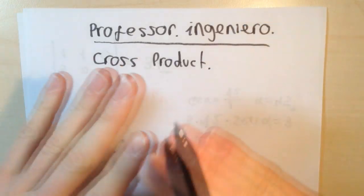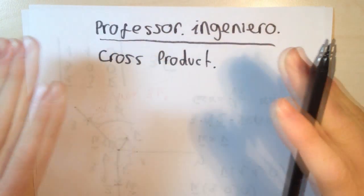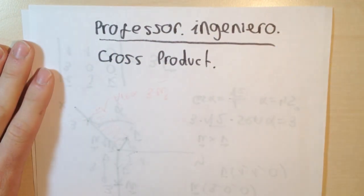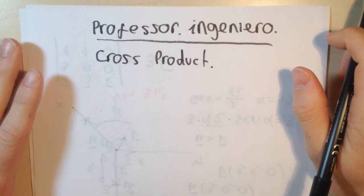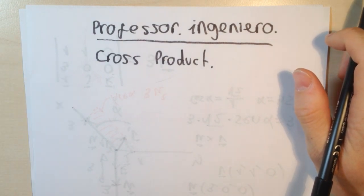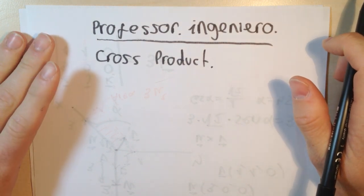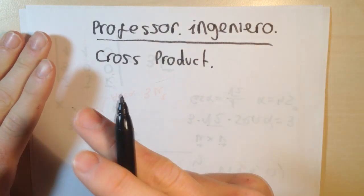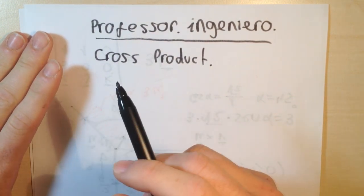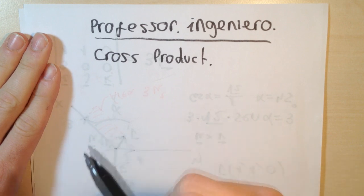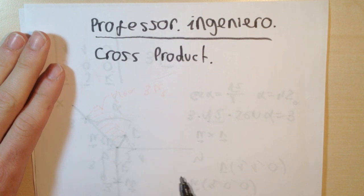When this video is finished, you will be like me, like teachers. You need to know that a cross product is a binary operation on two vectors in three-dimensional space — only in three-dimensional space. It results in a vector which is perpendicular to both of the vectors being multiplied, and therefore normal to the plane containing them.